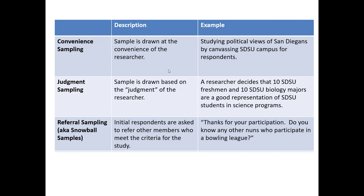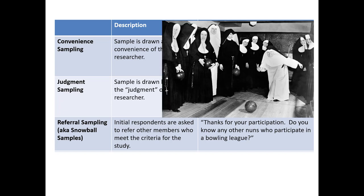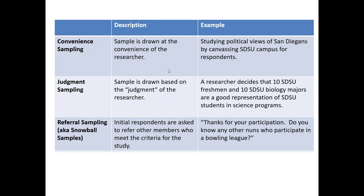So at the end of a study you might see something like, 'Thanks for your participation. Do you know any other nuns who participate in a bowling league?' Referral sampling is typically used in marketing research when the population of interest is so difficult to identify that the only credible way to reach them is to find a few individuals who qualify and see if they can refer us to others. It's one non-probabilistic technique that might be defensible because it may be the only viable technique available.